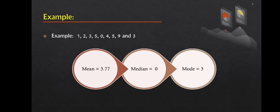Let's take this as an example. There are nine given values: 1, 2, 3, 5, 0, 4, 5, 9, and 3. To get the mean, we have to add all the given numbers and divide the sum by nine since there are nine values given. The result will yield 3.77. Therefore, our mean will be 3.77.